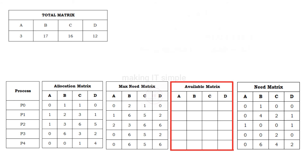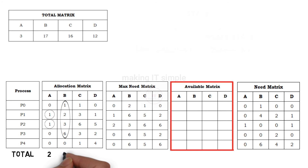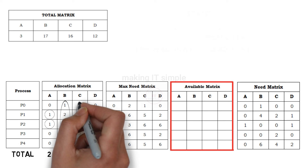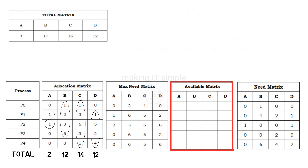First, let us calculate the available matrix. The available matrix defines how many resources are currently free and not allocated to any process. To calculate it, we first need the total number of allocated resources. 2 instances of resource A have been allocated in total; 1+2+3+6 = 12 instances of resource B; 1+3+6+3+1 = 14 instances of resource C; and 1+5+2+4 = 12 instances of resource D.